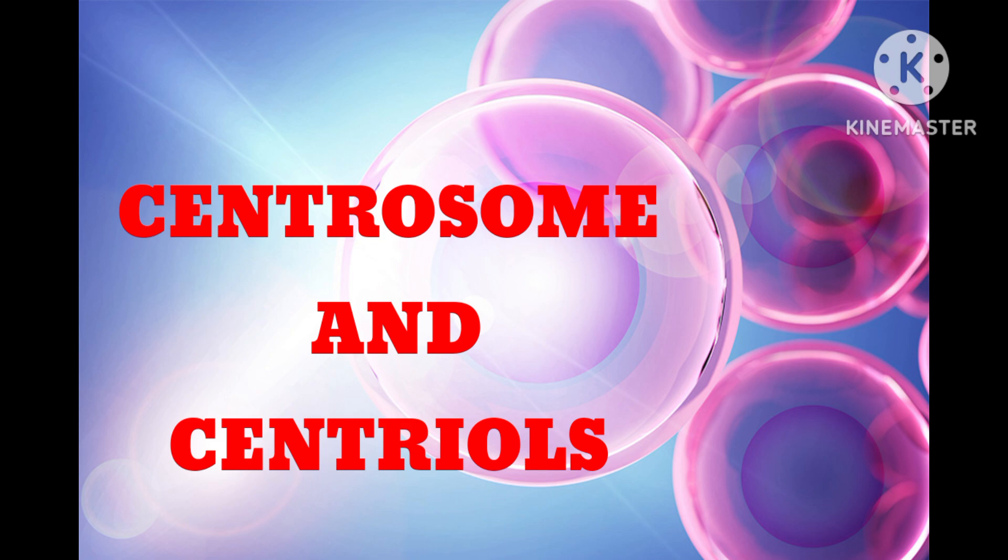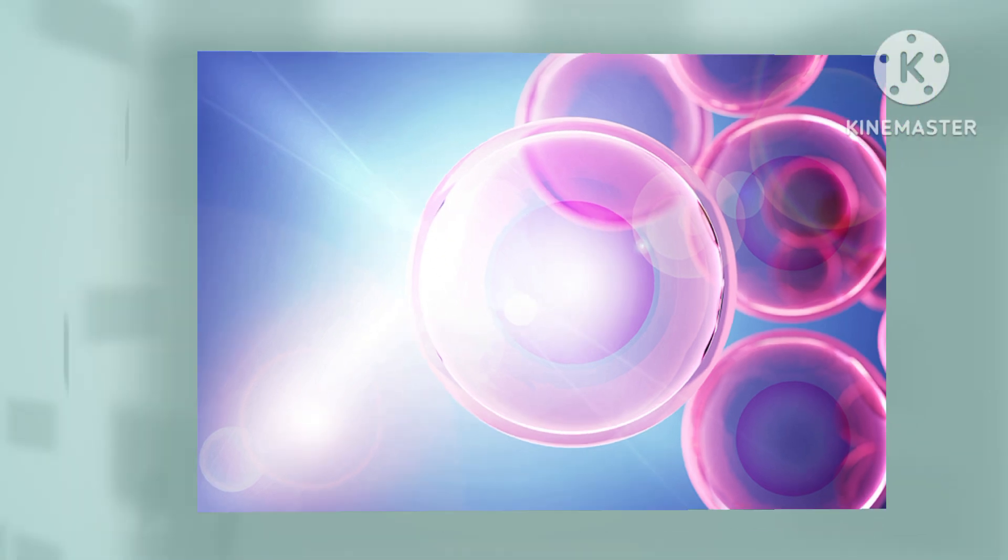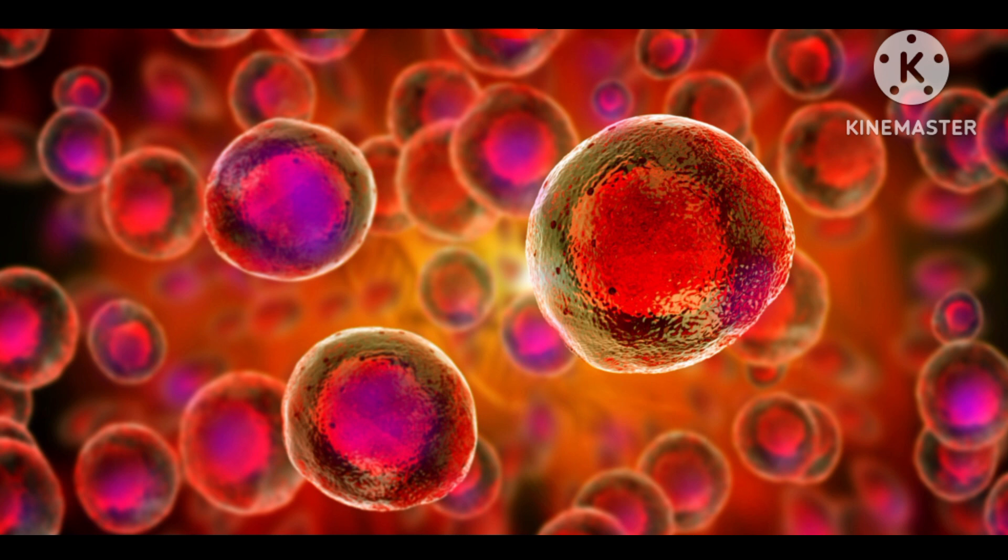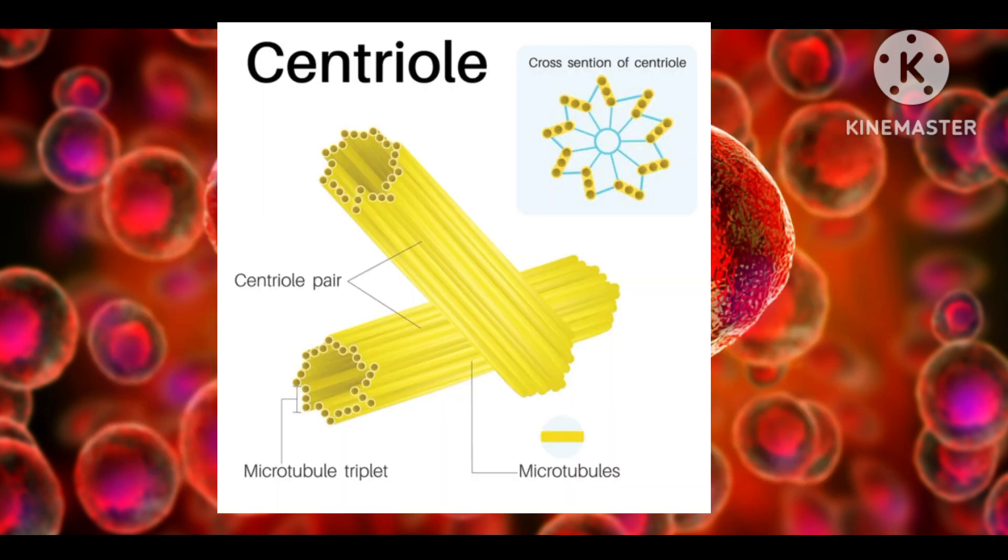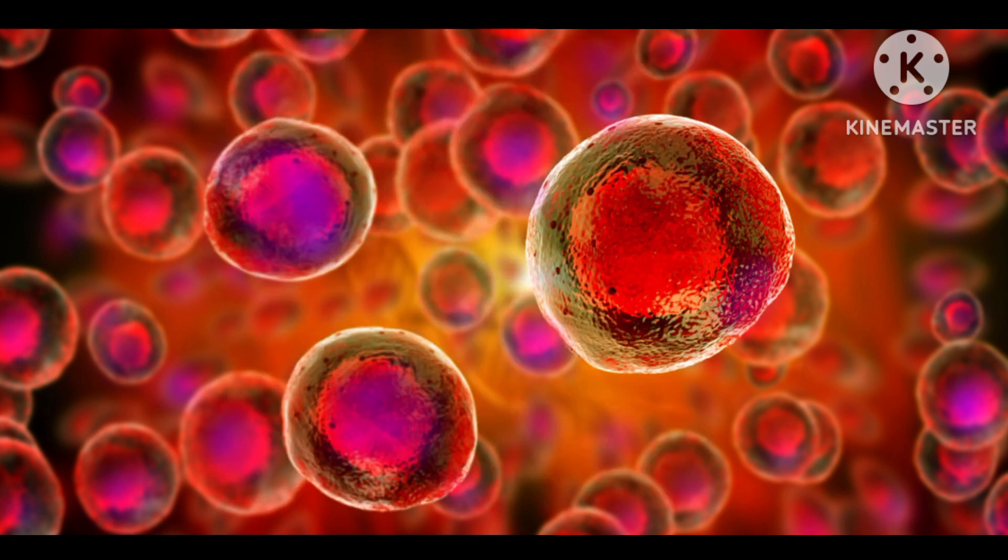A centrosome is a cellular structure involved in the process of cell division. Before cell division, the centrosome duplicates, and then as division begins, the two centrosomes move to opposite ends of the cell.